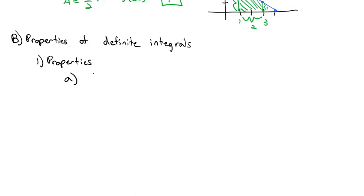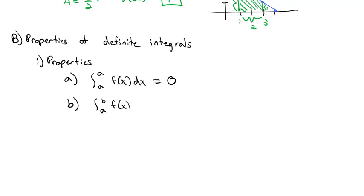Our first property: the integral from any point to itself of f(x) dx equals 0 — there's no width, so any height times zero width is zero. Second property: if we switch the order of integration, integrating from B to A instead of A to B gives the opposite sign — the negative of the original integral.